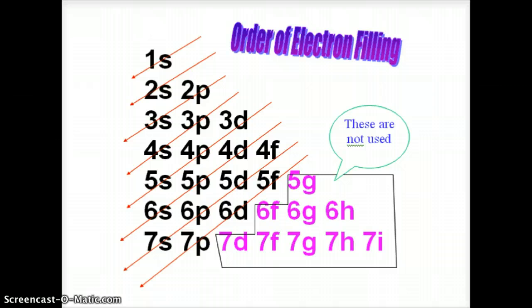When filling in electron configurations, there is a defined filling order. First 1s, then 2s, followed by 2p, then 3s, 3p, 4s. Then we go back to 3d, 4p, 5s, then 4d, 5p, 6s, then 4f, 5d, 6p, 7s, and so forth. However, we're not going to memorize this order — we're going to use the periodic table to figure out our electron configurations.